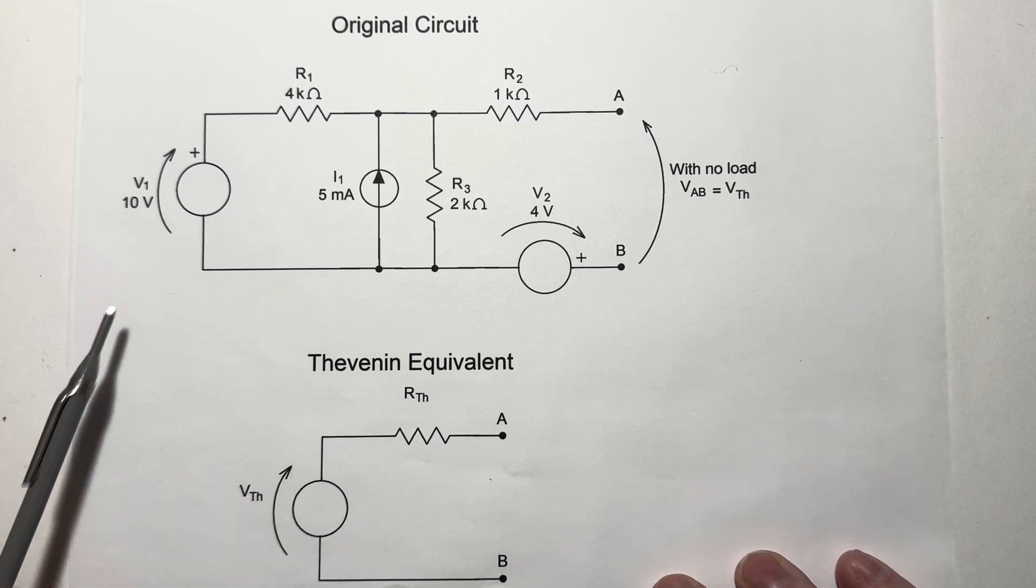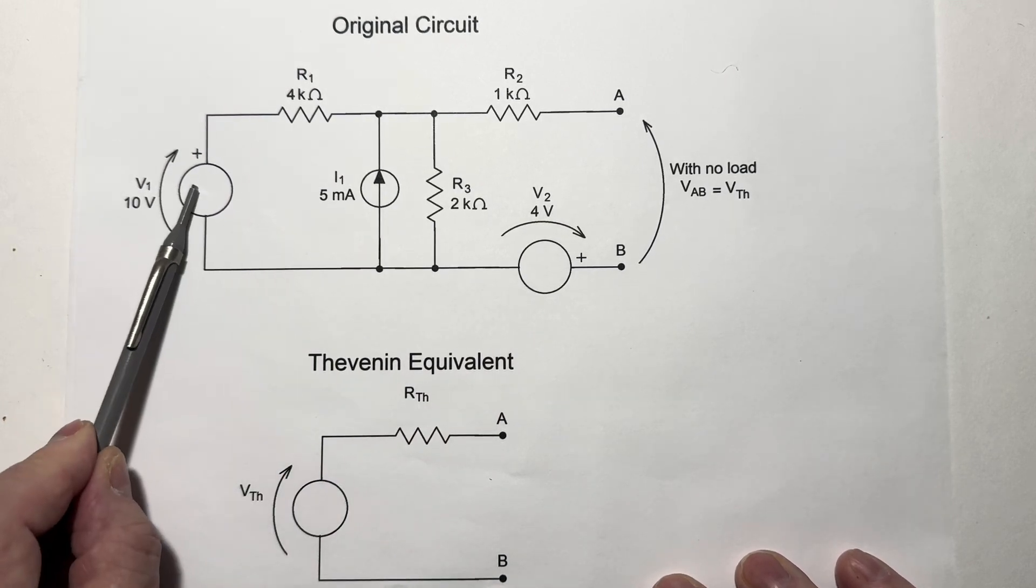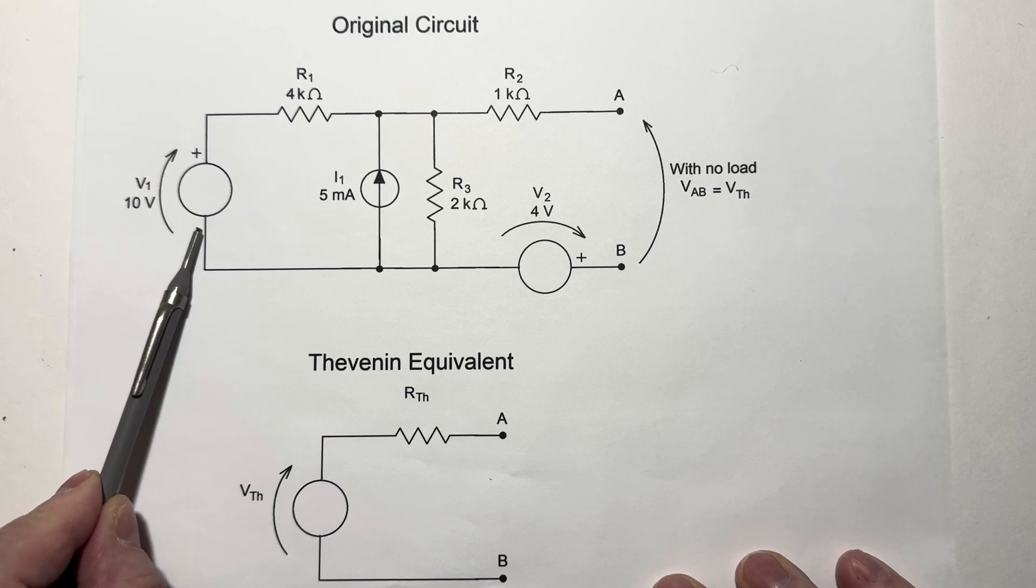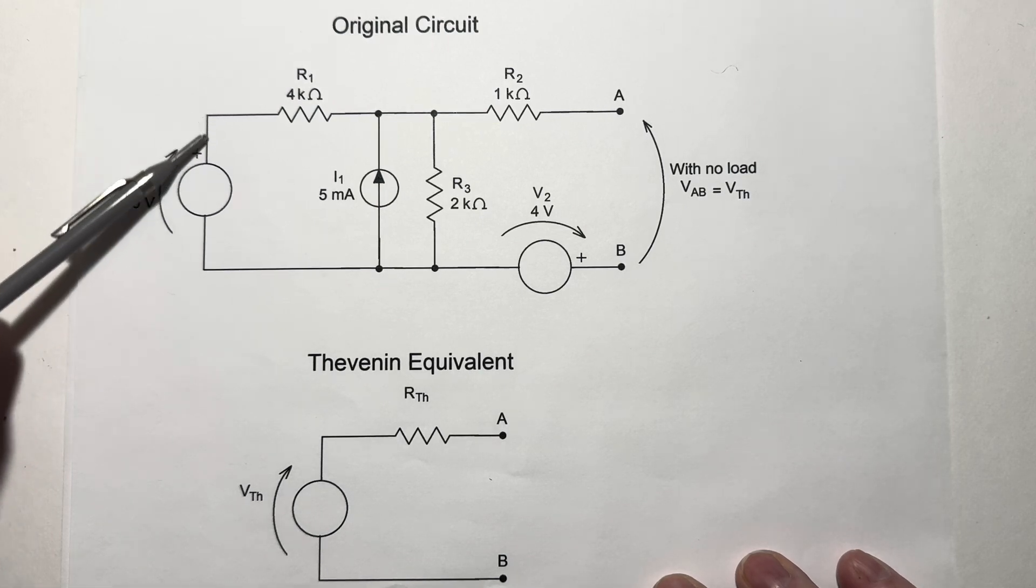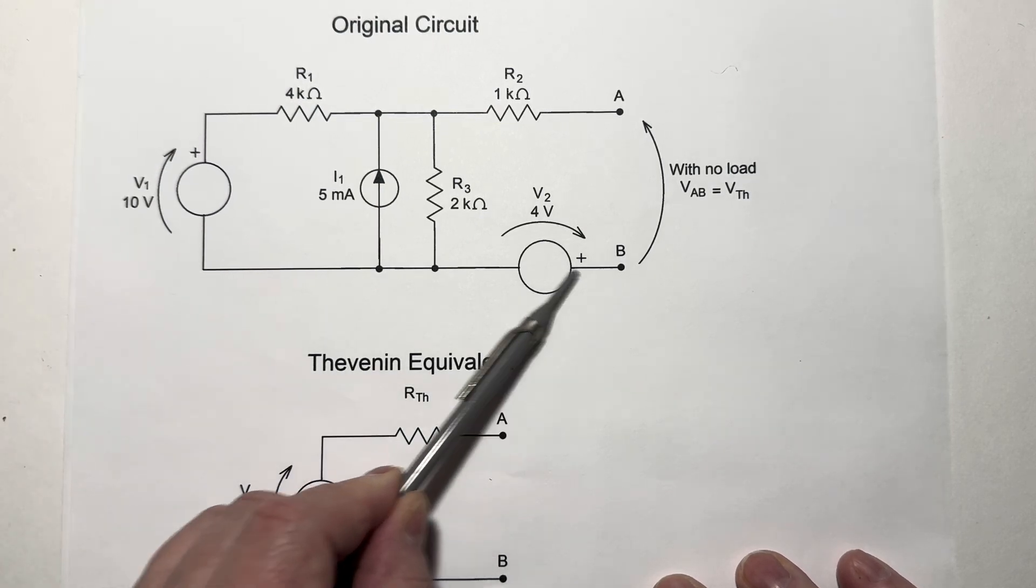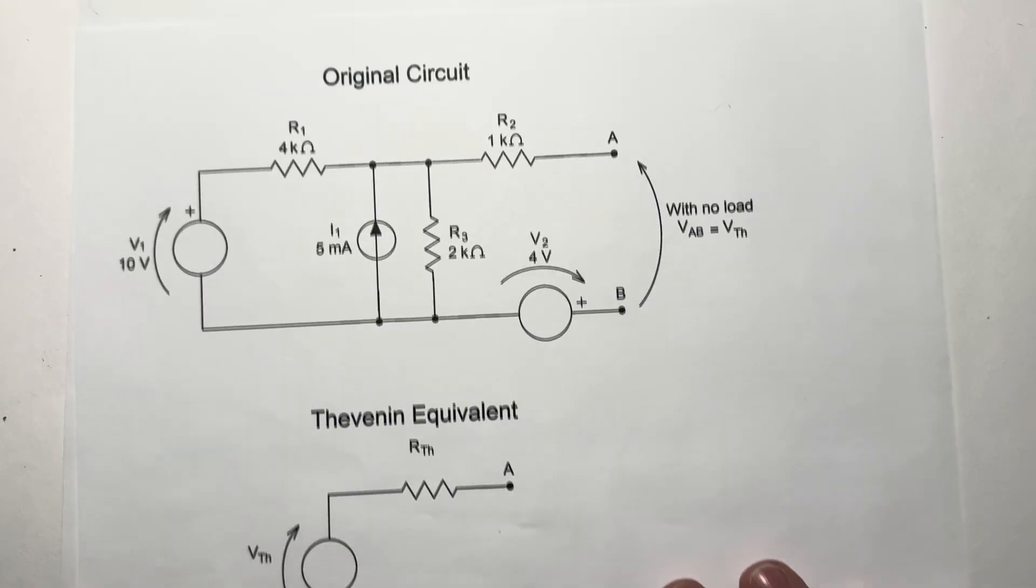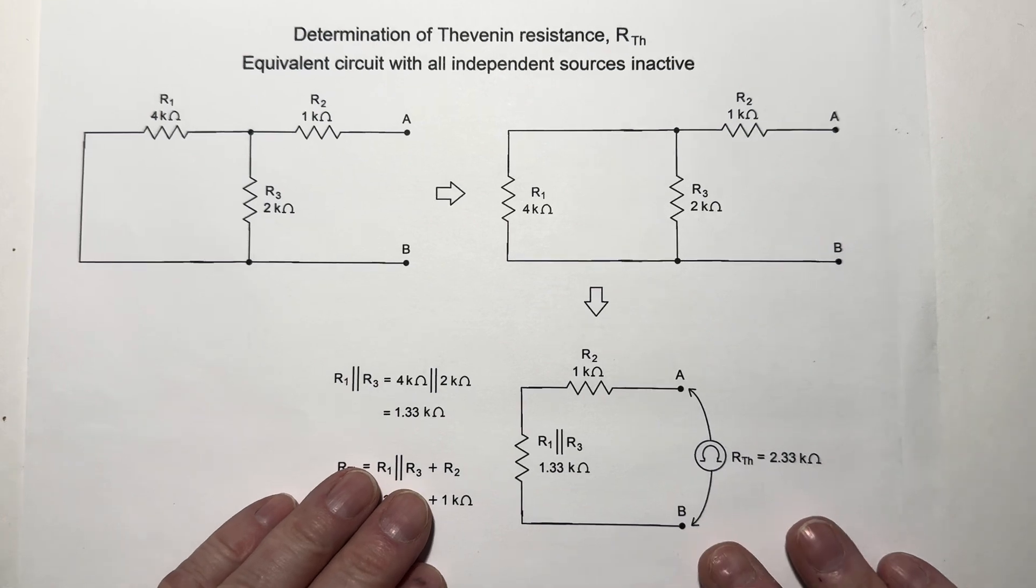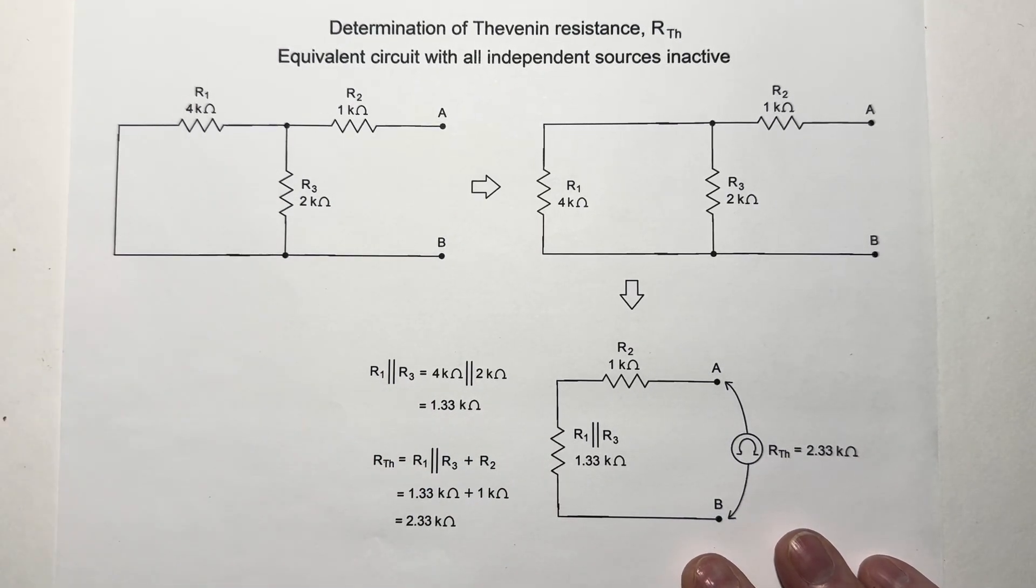To do that, we're going to deactivate all of the sources. Remember, when we deactivate a voltage source, we replace it with a short circuit. When we deactivate a current source, we replace it with an open circuit. So we're going to short this side, short this side, and open this thing. This is the equivalent circuit we get when we deactivate all of the sources.